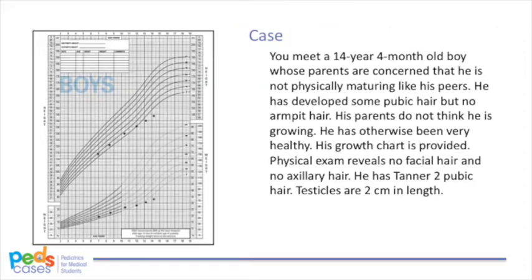As a continuation of our case example from part one and part two, the next day at the family medicine clinic, you meet a 14-year, 4-month-old boy whose parents are concerned that he's not physically maturing like his peers. He has developed some pubic hair, but no armpit hair. His parents do not think he's growing. Physical exam reveals no facial hair, no axillary hair, Tanner 2 pubic hair, and his testicles are 2 centimeters in length.